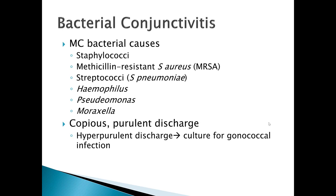Moving on to bacterial conjunctivitis, the most common causative agents that are not gonorrhea and chlamydia are staphylococcal, MRSA, streptococcal, haemophilus, pseudomonas, and moraxella. The classic presentation of bacterial conjunctivitis is copious purulent discharge. If there's hyperpurulent discharge, tons and tons of it, you have to start thinking that you might have a gonococcal infection versus one of the agents mentioned above.